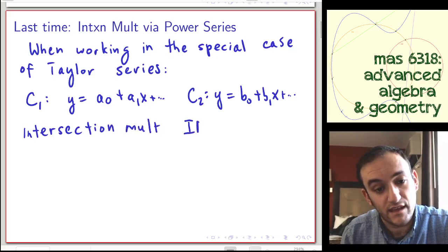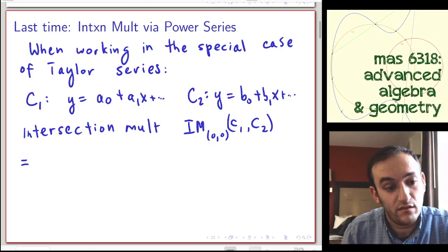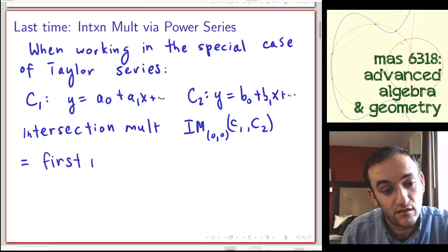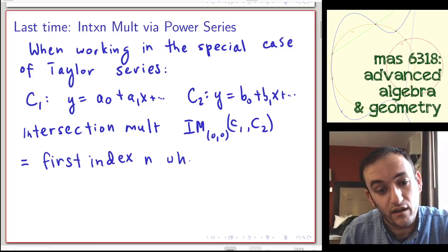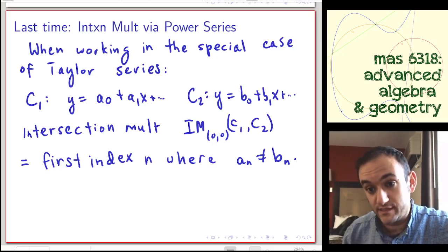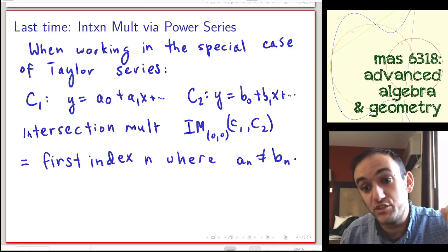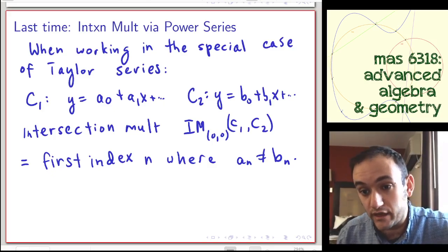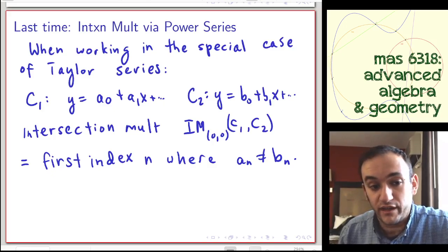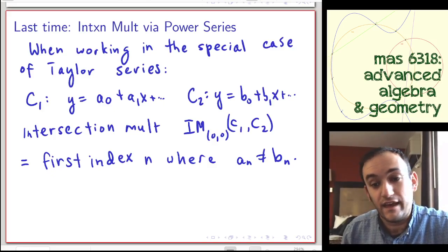We write this as I at the point (0,0) of c1 and c2, given by the first index n where a_n is not equal to b_n. So if the first terms are equal, that means the value of the two functions at x equals zero is the same, so the functions do intersect there and their intersection multiplicity is at least one. If in addition they agree in their second coefficient a_1, then their intersection multiplicity is at least two.